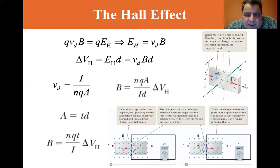When the charge carriers are negative, the upper edge of the conductor becomes negatively charged and C is at a lower electric potential than A. The charge carriers are no longer deflected when the edges become sufficiently charged that there is a balance between the electric force and the magnetic force.